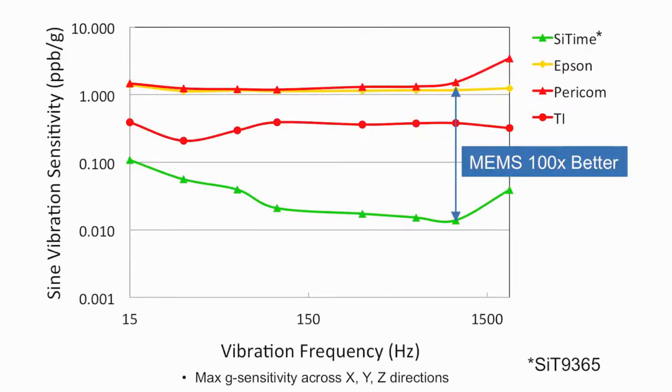The above plot shows the oscillator response to a sinusoidal vibration profile of magnitude 4g from 15 Hertz to 2 kilohertz in units of parts per billion frequency shift per G of acceleration. The MEMS has 3 to 100 times lower sensitivity to sinusoidal vibration than quartz-based oscillators depending on vibration frequency and vendor. This is in large part due to the lower mass of the MEMS resonator relative to quartz resonators.